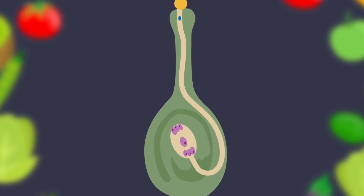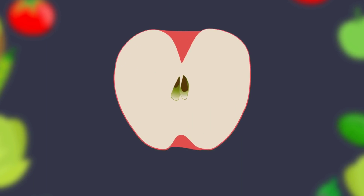The male sex cells travel from the pollen grain down the pollen tube to the female ovule. Here, one male sex cell fuses with the female egg, fertilizing it — this develops into a seed. The other male sex cell attaches to two cells in the embryo sac, forming an endosperm, which provides the starchy food for the seed to grow. The ovary enlarges and becomes a fruit.